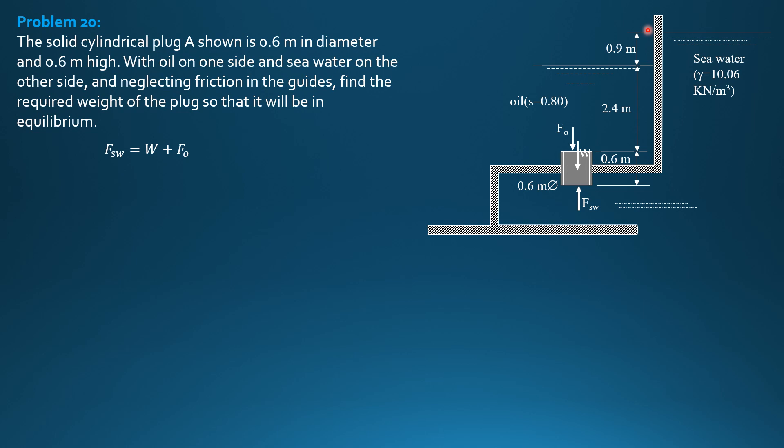Barred H is the distance from seawater surface down to the centroid vertically. So 0.9 plus 2.4 plus 0.6. Then area π times 0.3 squared. The radius is 0.3. So FSW is 10.06 times 0.9 plus 2.4 plus 0.6 times π times 0.3 squared.